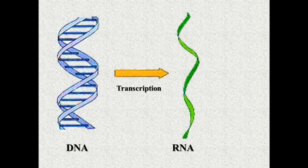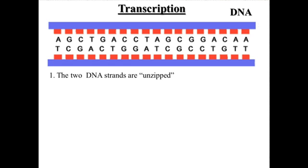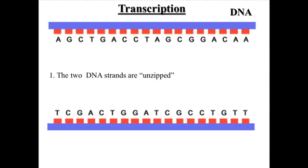Transcription is a process whereby we make a messenger RNA copy of a DNA gene. To do that, we first start out with a double strand of DNA. What you see here is the double strand of DNA — like a ladder that's been straightened out — so you have an A bonded with T, G with C, C with G, and so on down the line. The first thing we have to do in transcription is unzip the double strand of DNA, and we have an enzyme that does this.